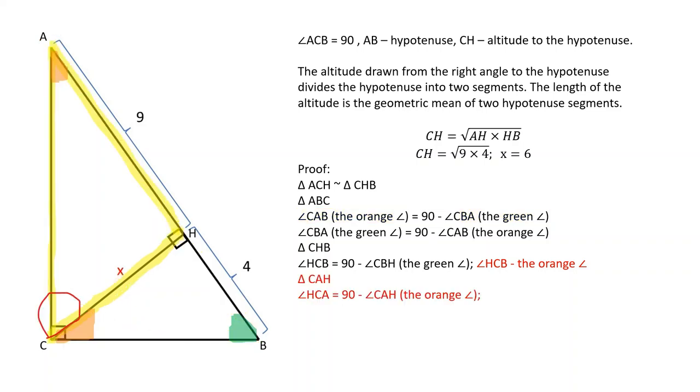In triangle CAH, angle HCA is equal to 90 minus angle CAH, the orange angle. Therefore, it's equal to angle CBA, the green angle.